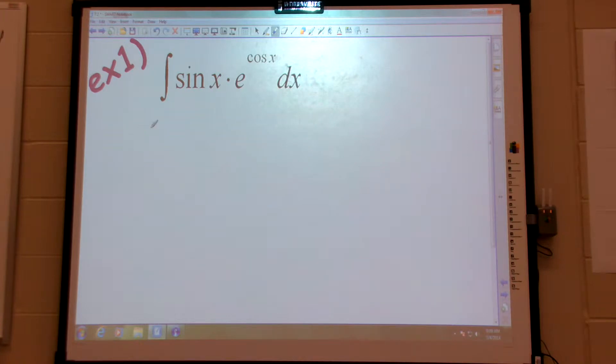Okay, but anyway, I need to pick a u. Now, I need to pick something whose derivative kind of naturally appears, or close to its derivative appears. I'm going to pick cosine.